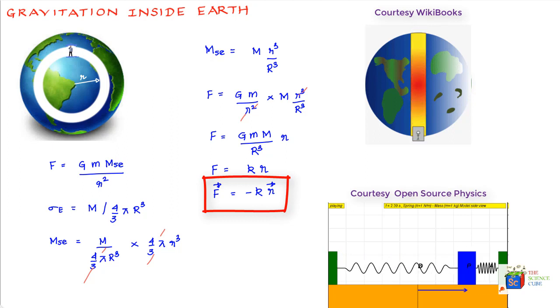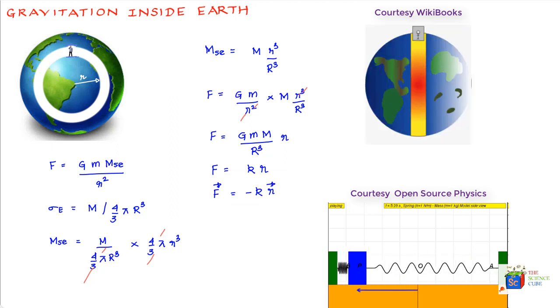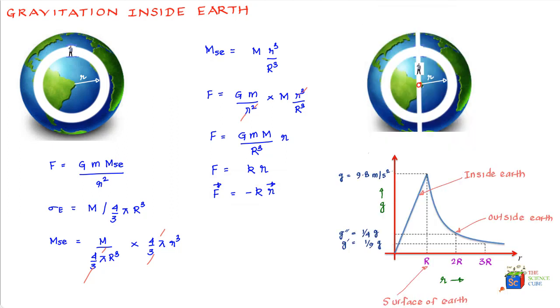So if you were to plot a graph between R value and the gravitational force, it would look something like this, where from center of the Earth to the surface of the Earth, the force would be a linear function of the position vector r. But beyond the surface of the Earth, it will change as the inverse of position vector square value, as we learned in the earlier lesson.